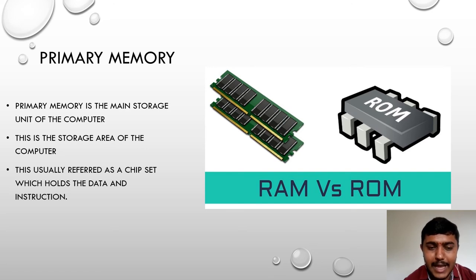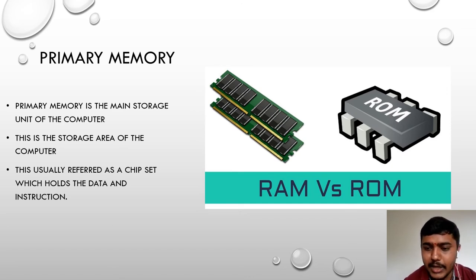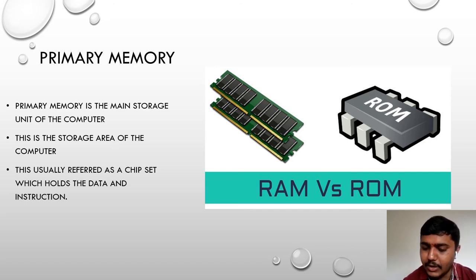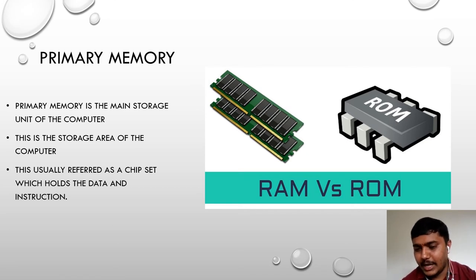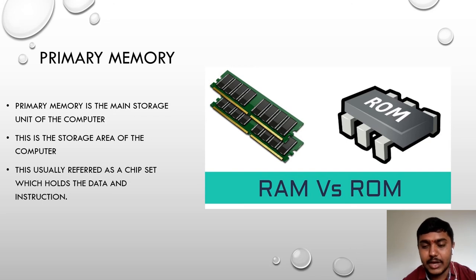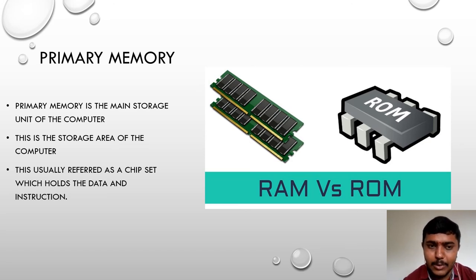Primary memory is referred to as a chipset which holds data and instructions. RAM and ROM are present inside the CPU — they are hardware components you can touch and feel. RAM and ROM together form the primary memory. If your system has a problem, you can try removing and re-inserting the RAM. When you boot up the operating system, it completely runs on RAM.